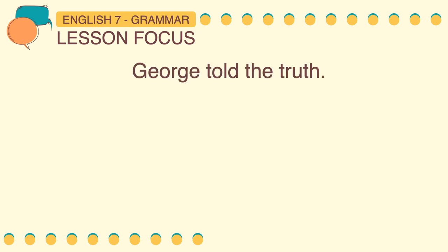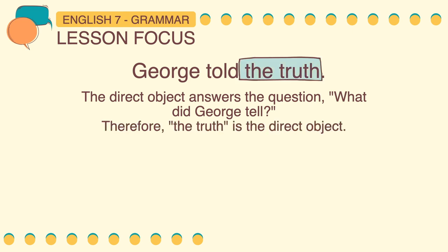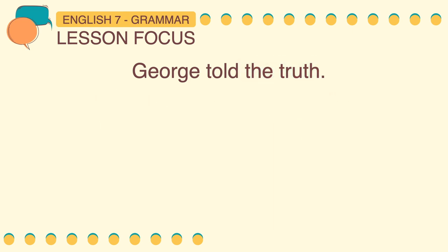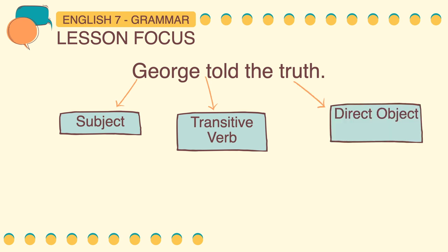Moving on to another example sentence: George told the truth. To know the direct object, it should answer the question: what did George tell? In this sentence, George is the subject, told is the transitive verb that needs a receiver, and the truth is the direct object.